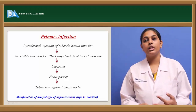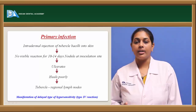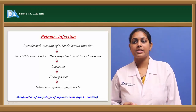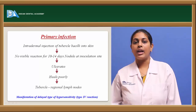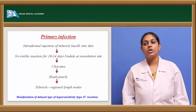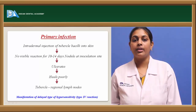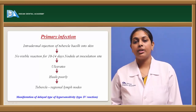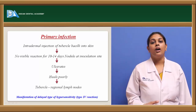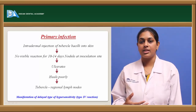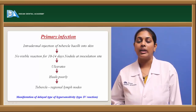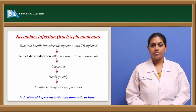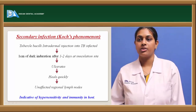The nodule slowly grows, then ulcerates, and heals poorly because of the immunocompromised condition. As it heals poorly, it may result in formation of a tubercle attacking the regional lymph node. This manifestation in primary infection comes under Type 4 hypersensitivity — a delayed type — since the reaction takes up to one to two weeks.